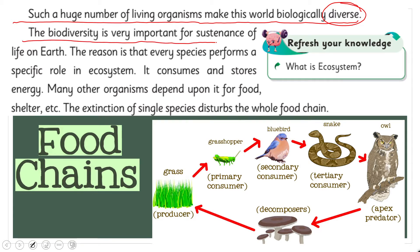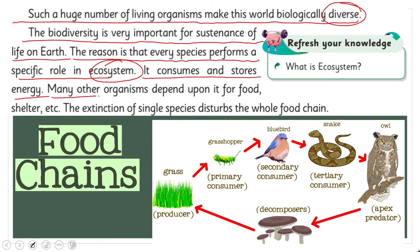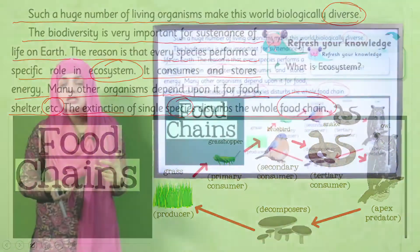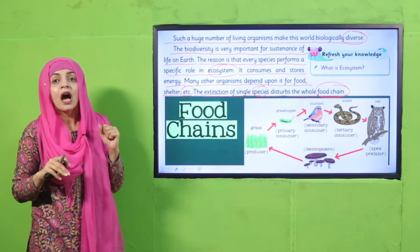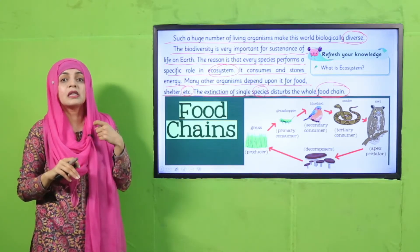Such a huge number of living organisms makes this world biologically diverse. Biodiversity is very important for the sustenance of life on Earth. Every species performs a specific role in the ecosystem — it consumes and stores energy, and many other organisms depend upon it for food and shelter. The extinction of a single species disturbs the whole food chain.